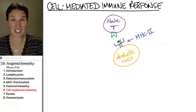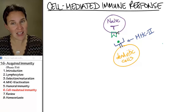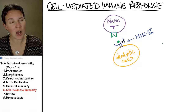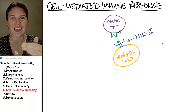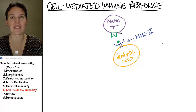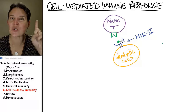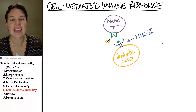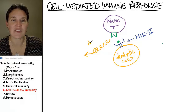T cell plus antigen — nothing. T cell plus antigen on MHC2 — remember how I told you that the T cell, in order to have positive selection, had to be able to bind to MHC molecules? Here's one of the reasons why. This process, if they bind, is going to lead to activation.